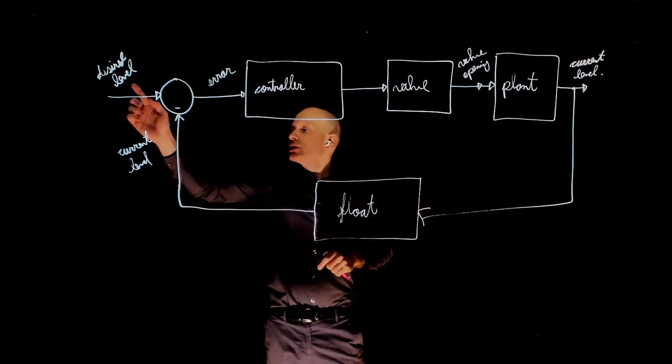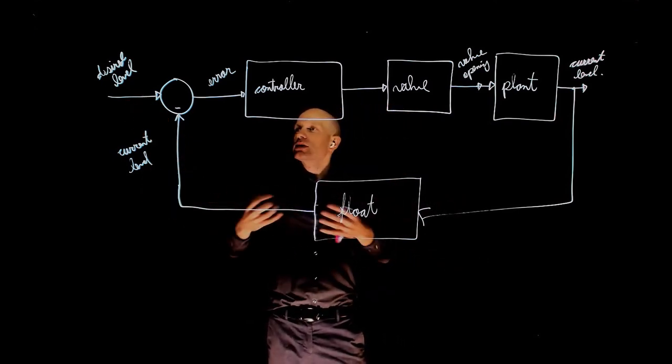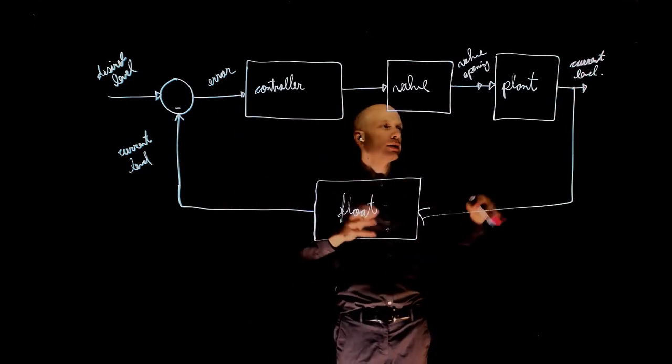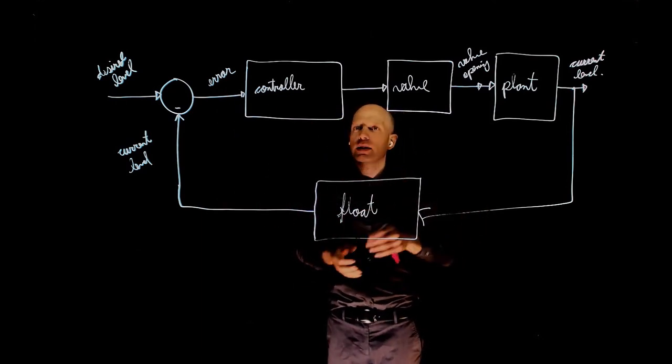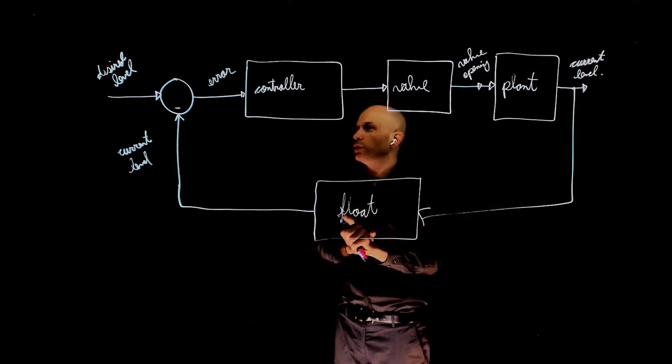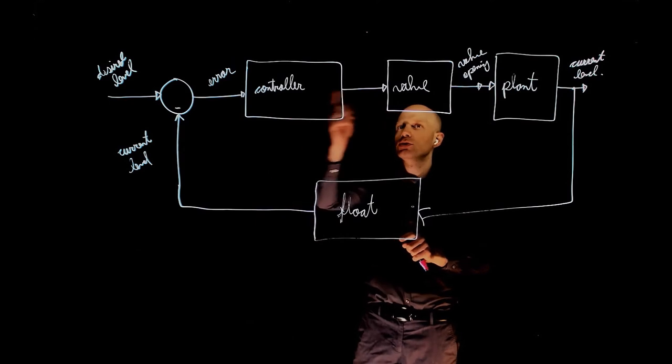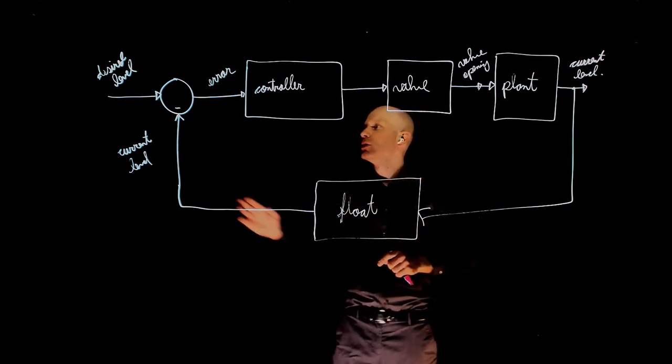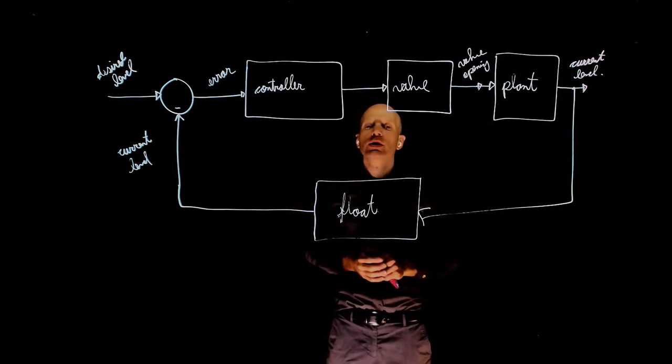So now, when the desired level and the current level are the same, the error is zero, and the controller will likely close the valve to maintain the same level. And as soon as we see any difference there, that can be detected through the float, the system resumes, and we will always correct for any discrepancies between the desired and the current water level.